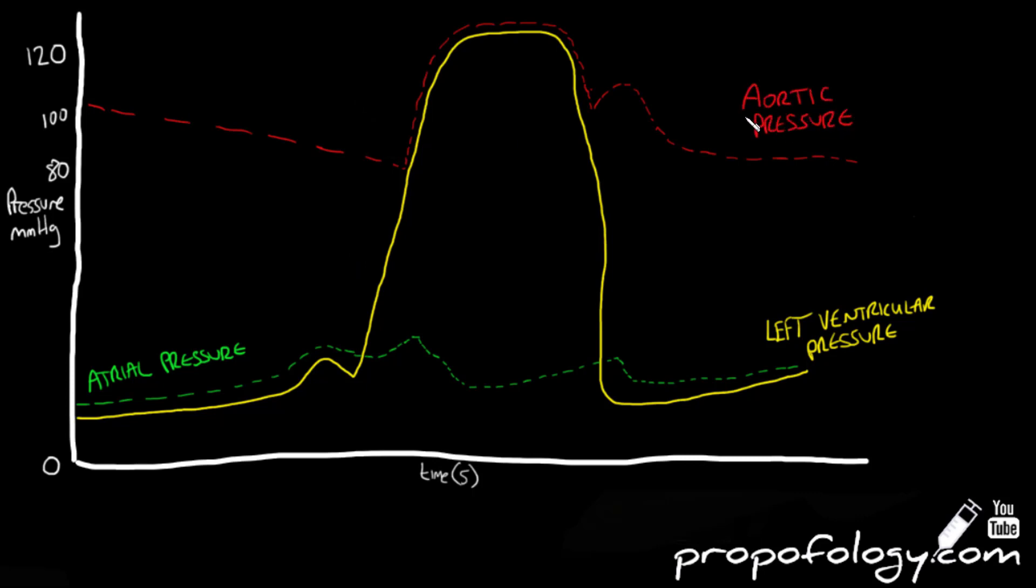As ventricular contraction begins to fade, the pressure in the aorta falls and rises transiently with the closure of the valve again. This is due to backflow against a closed valve. This falls again rapidly to begin again when the cycle starts once more.